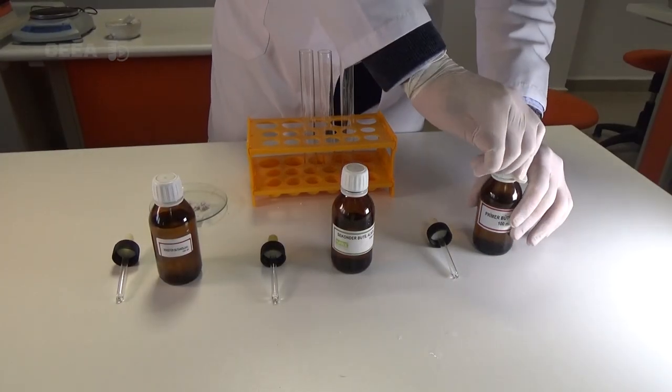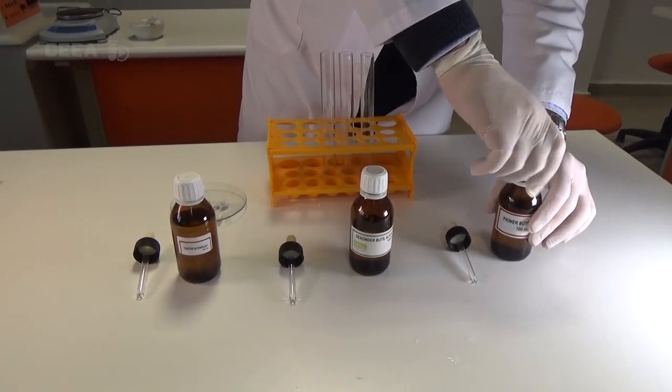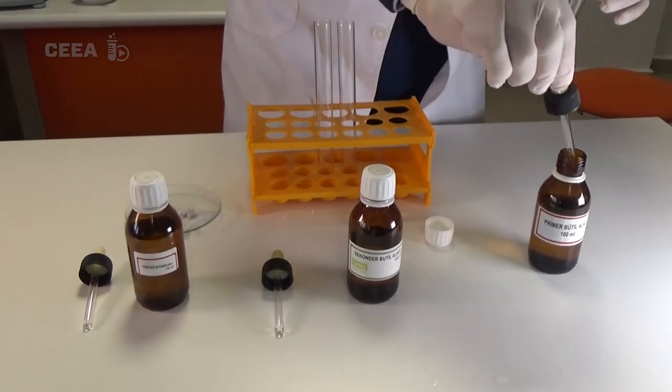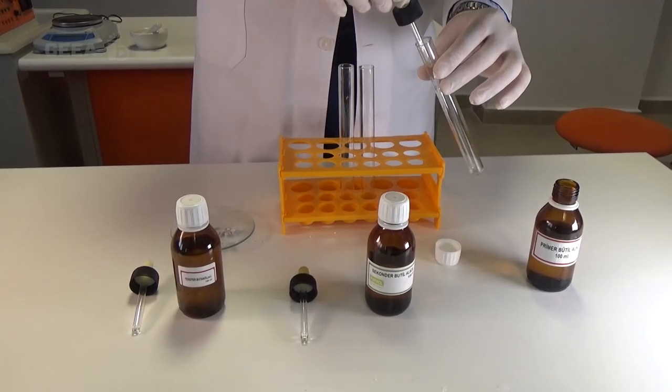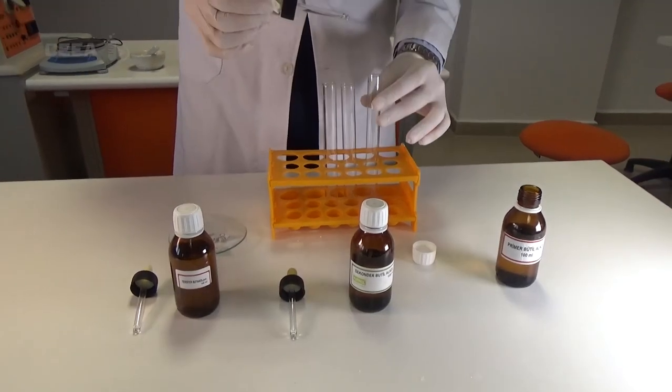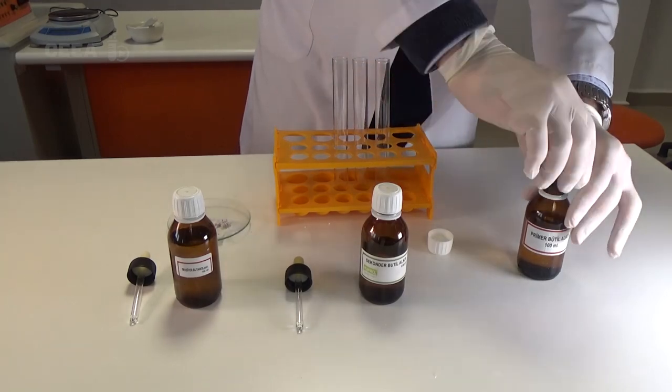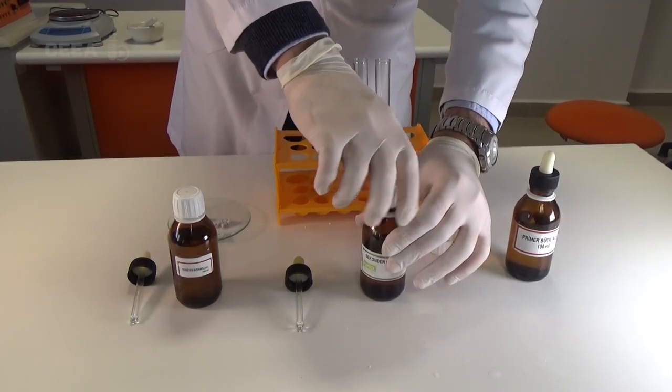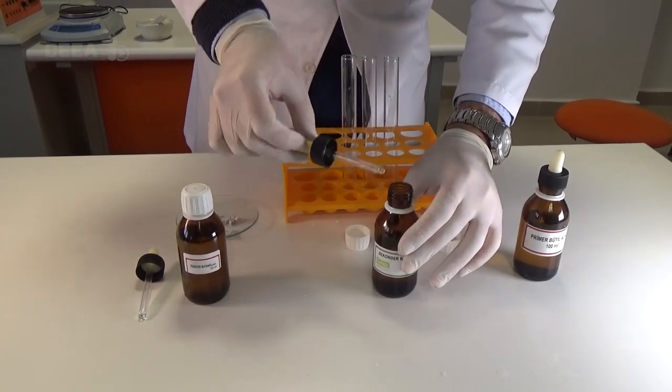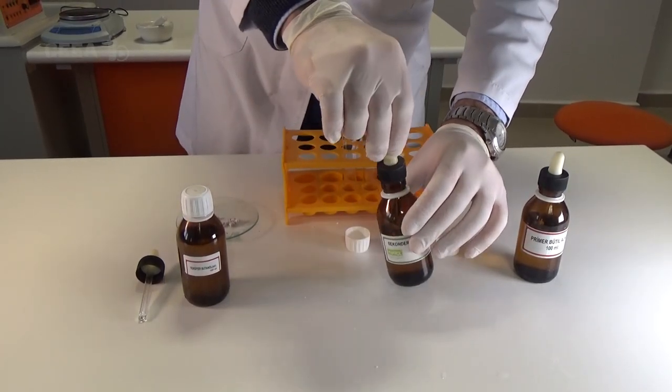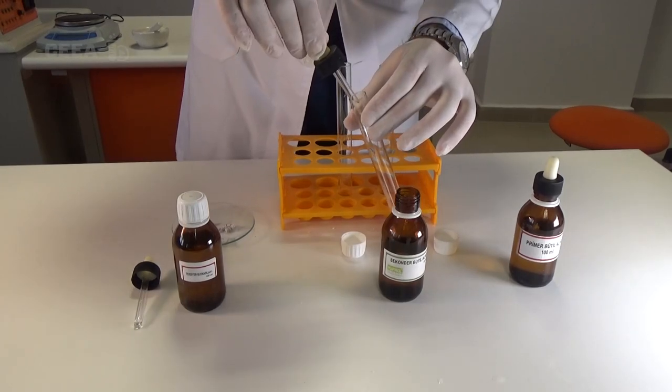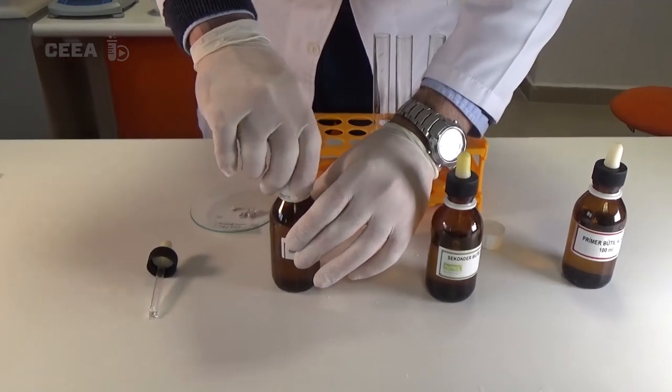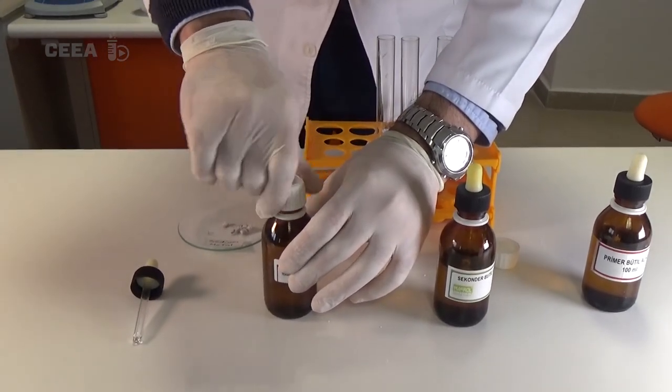Put 3 milliliters of butyl alcohol into one of the clean tubes, 3 milliliters of secondary butyl alcohol into the second tube, and 3 milliliters of tertiary butyl alcohol into the third tube.